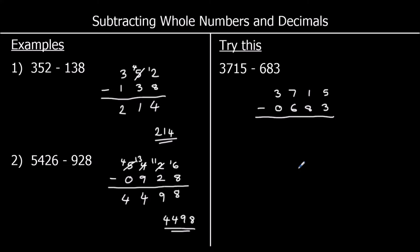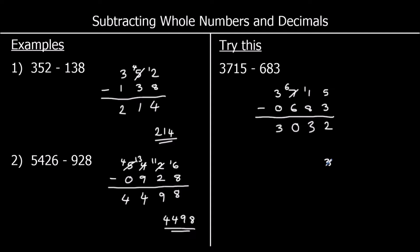So now we can take away. We start with the smallest column, which is the ones. We've got 5 take away 3, which is 2. Now the tens: I've got 1 take away 8; I don't want to do that, so I'll steal one of the hundreds, and that'll be worth 10 in the tens. So I've got 11 take away 8, which is 3. In the hundreds, 6 take away 6 is nothing. And in the thousands, 3 take away nothing is 3. So my answer is 3,032.